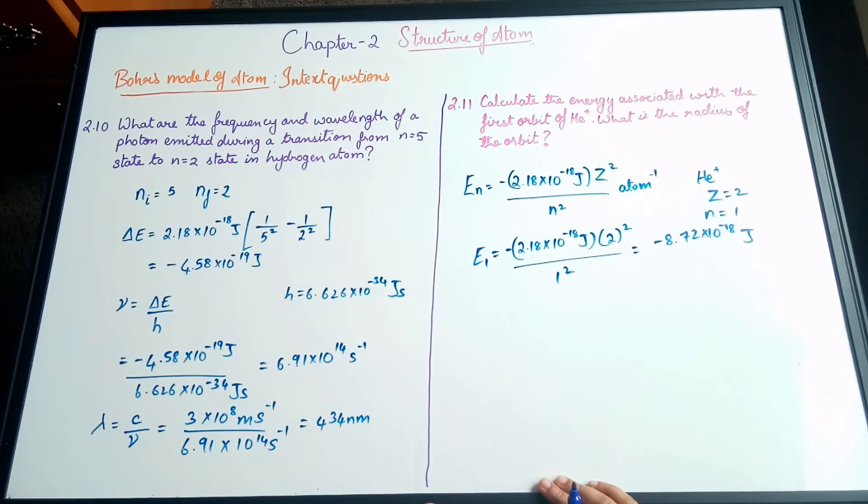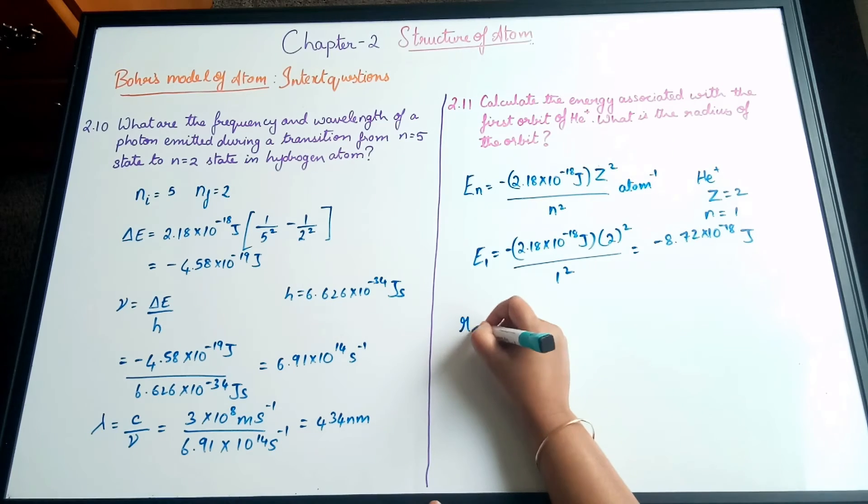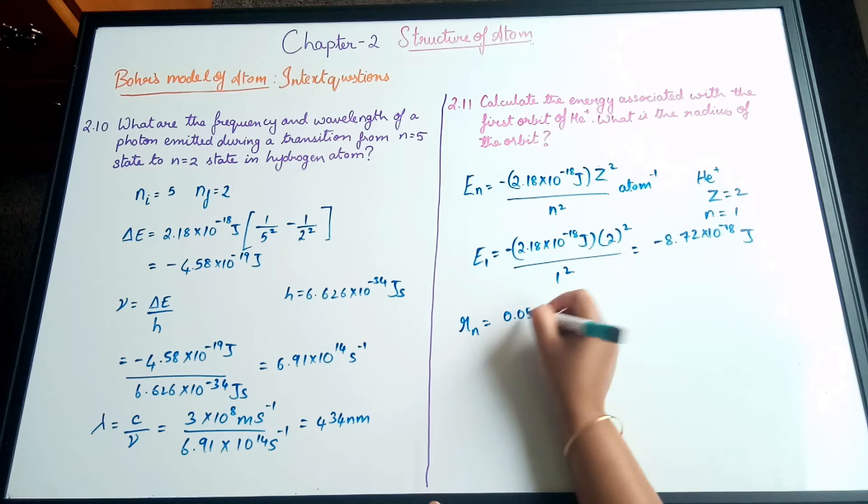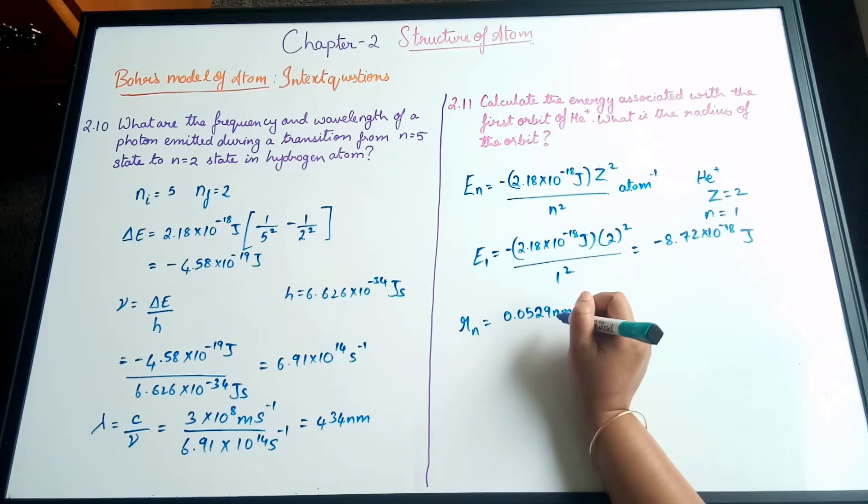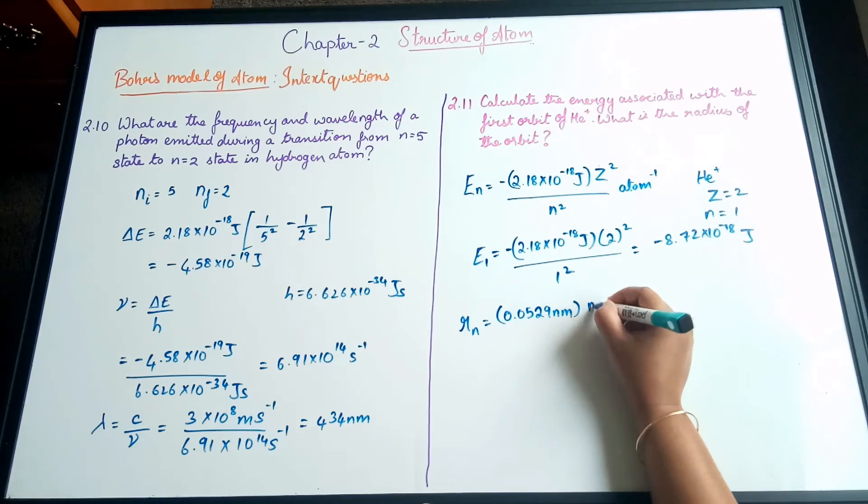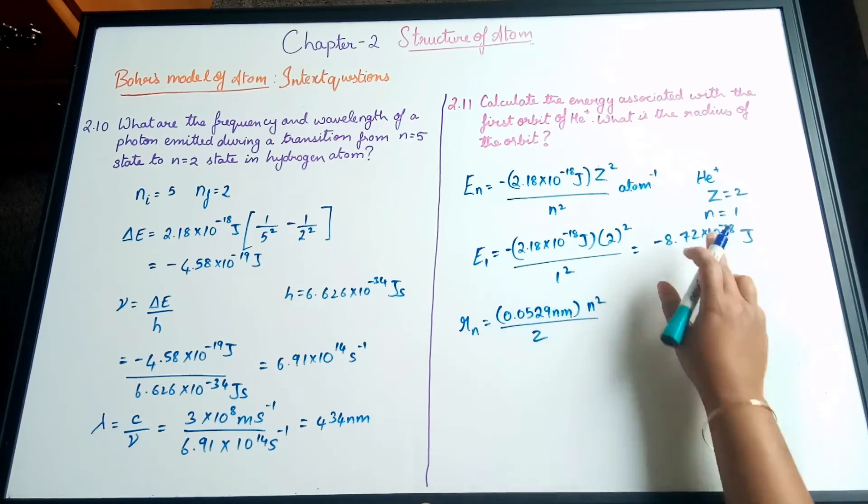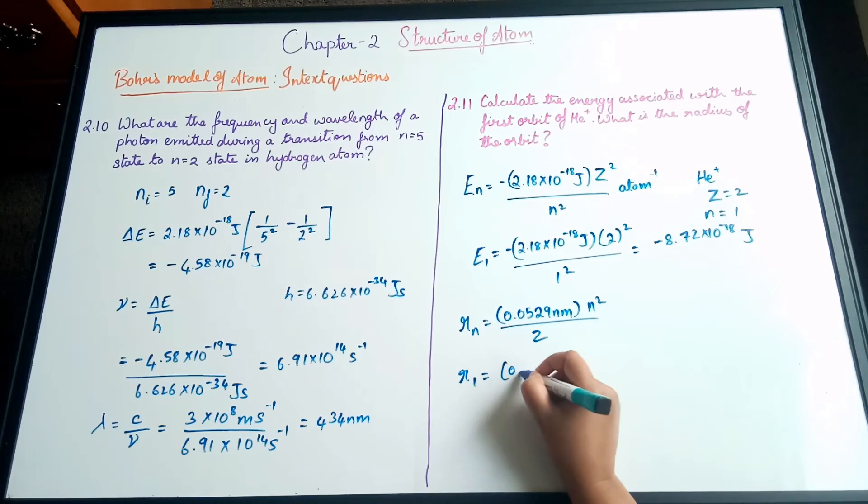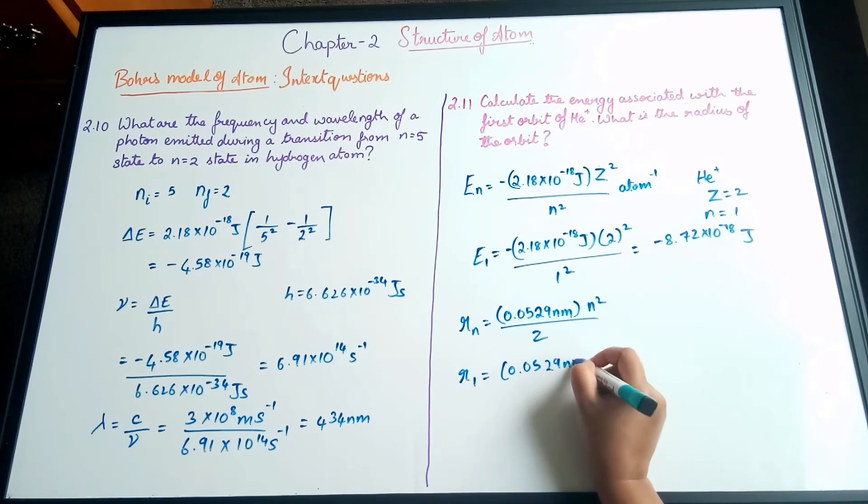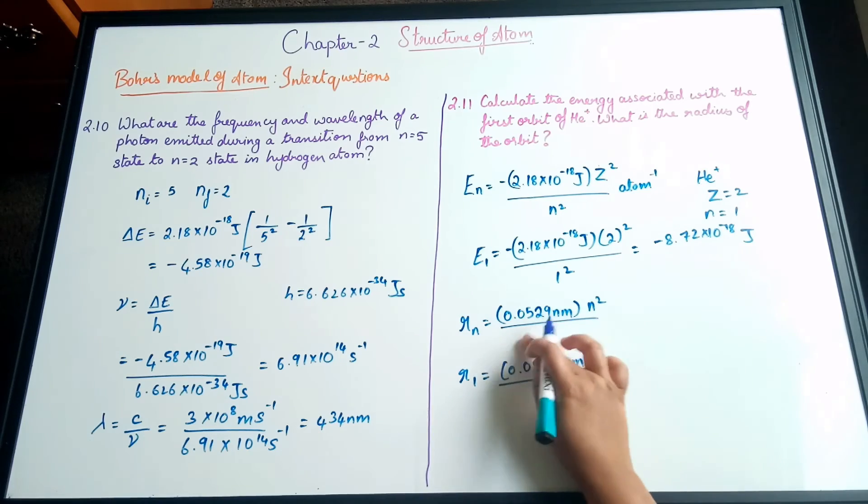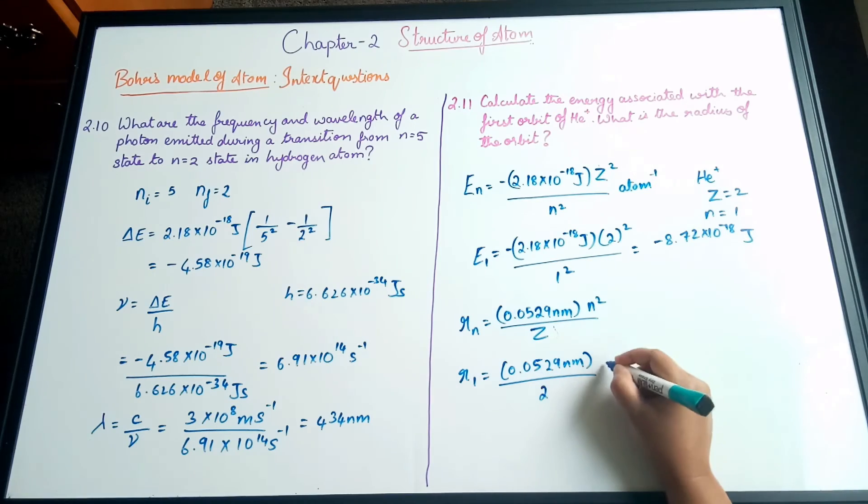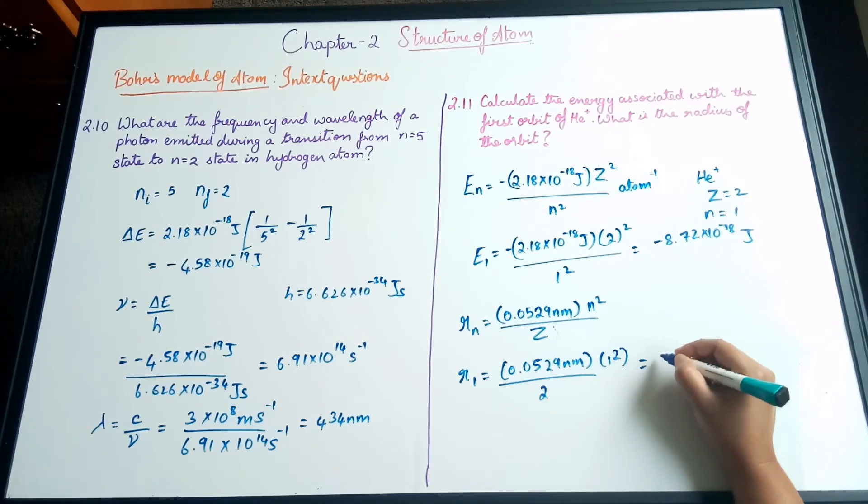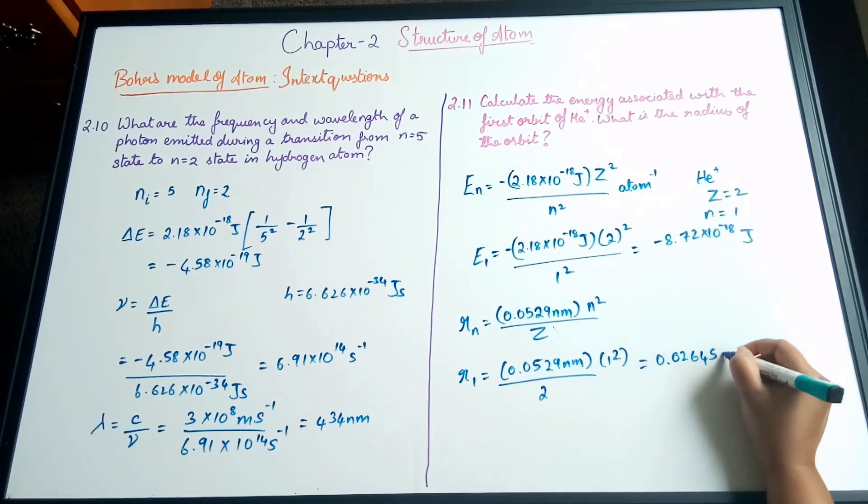Similarly we can calculate the radius. rₙ = 0.0529 nanometers (converted from 52.8 picometers) × n²/Z. We know Z=2 and n=1 for the first orbit. So the radius r₁ = 0.0529 nanometers ÷ 2 × 1². When simplified we get 0.02645 nanometers.